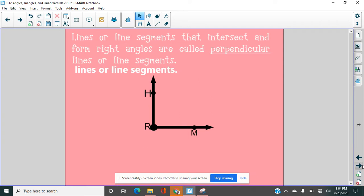Lines or line segments that intersect and form right angles are called perpendicular. So, whenever you see two, whether it's rays or line segments or lines that cross at a right angle, they are perpendicular. So, in this situation, ray RM is perpendicular to ray RH.